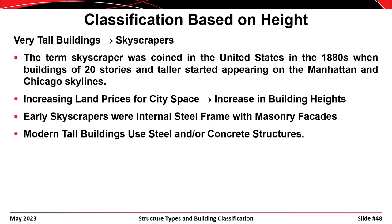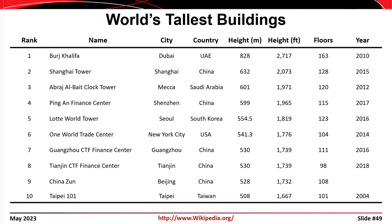The term 'skyscraper' was coined in the 1880s for buildings 20 stories or taller, first appearing in Chicago and Manhattan primarily due to increasing land prices in cities — it was cheaper to buy a small parcel of land and build tall. Early skyscrapers had steel-framed interiors with masonry facades. The world's tallest building is currently in Dubai, the Burj Khalifa, at a height of 2,700 feet — roughly half a mile — with 163 floors, completed in 2010.